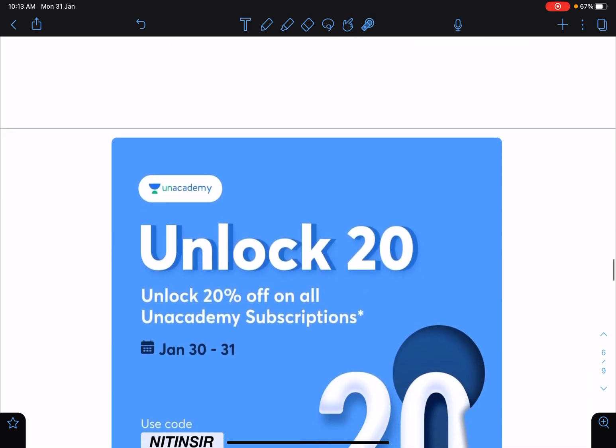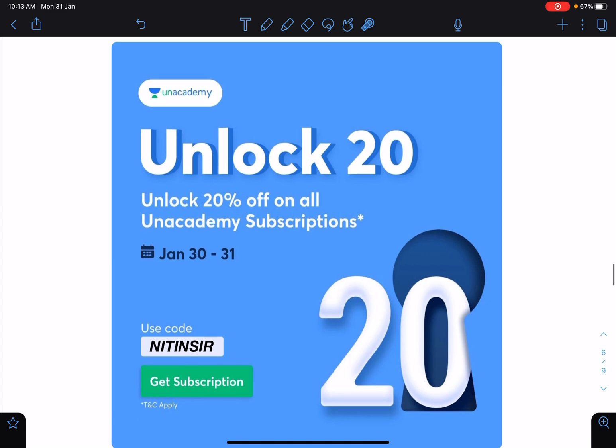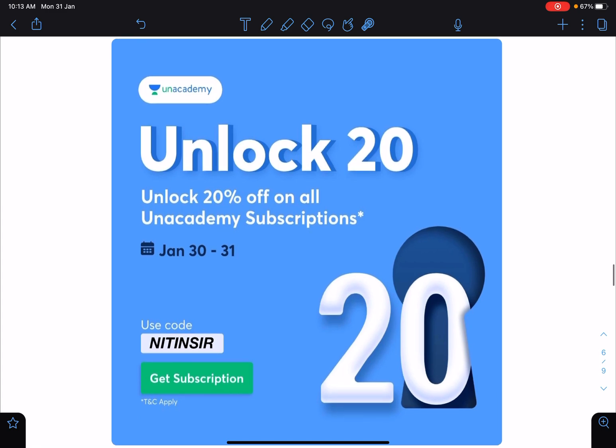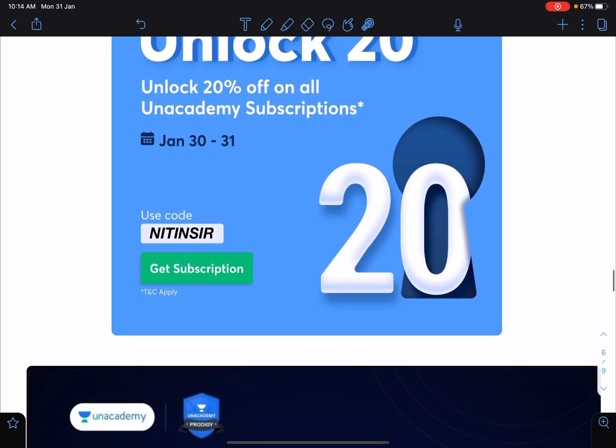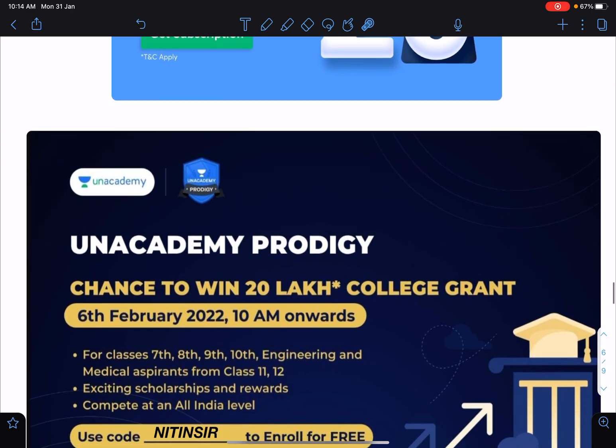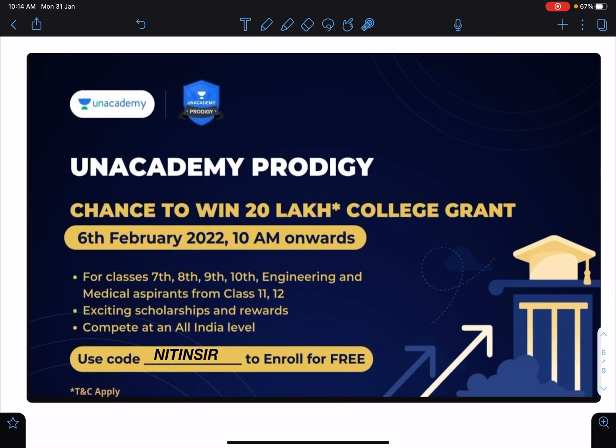So guys, here there is this unlock 20. You will be getting 20% off on your subscription of Unacademy, and this offer is valid only till today. Just those who want to utilize this can use my code Nathan sir for getting this subscription. And the next Unacademy Prodigy exam is on 6 February, 10 a.m. onwards, and you can win a lot of scholarships including 20 lakhs rupees of college grant.